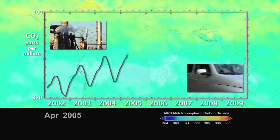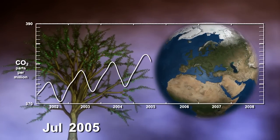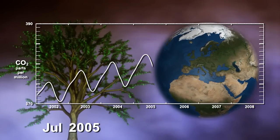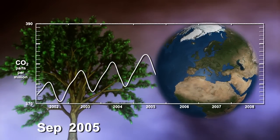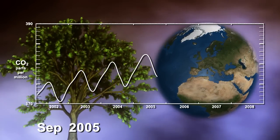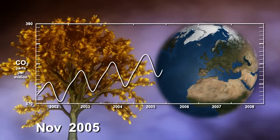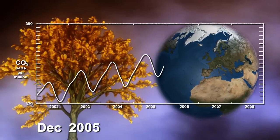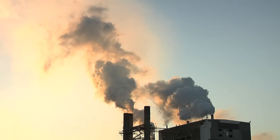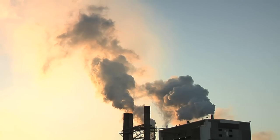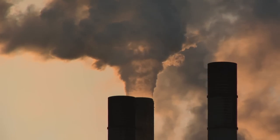In photosynthesis, plants absorb sunlight and carbon dioxide to make oxygen. And in what's known as respiration, plants produce small amounts of carbon dioxide that is released back into the atmosphere. When we burn coal and fossil fuels, lots of carbon dioxide is released into the atmosphere.